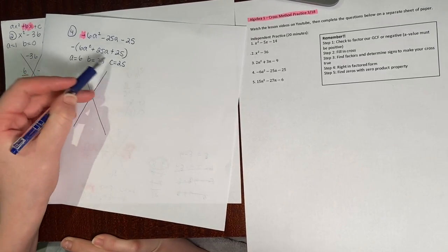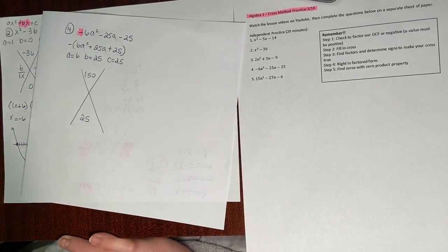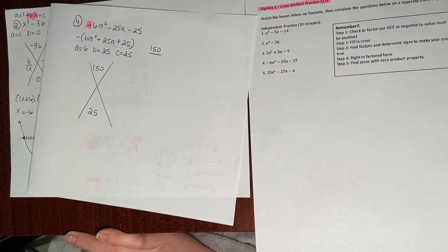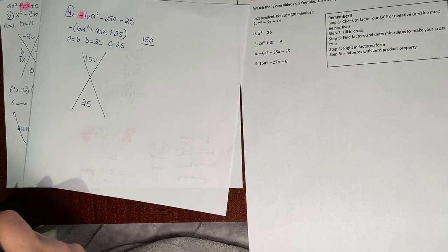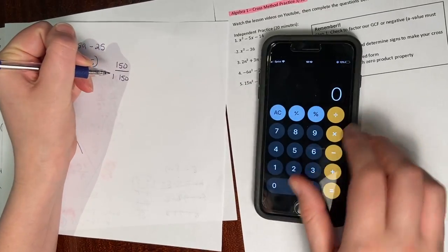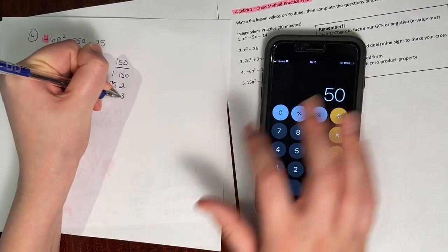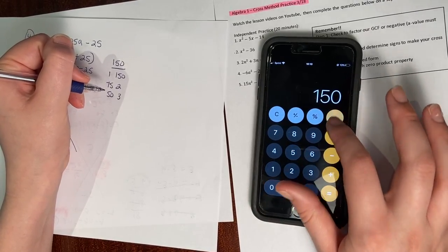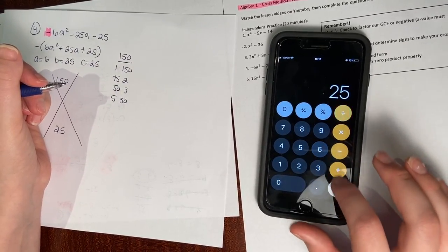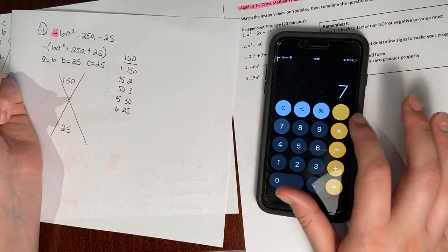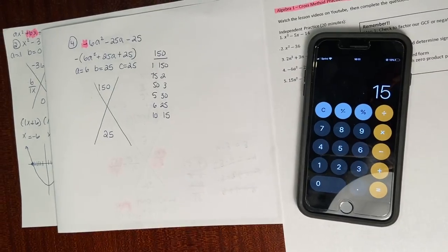A times c is 6 times 25, giving me 150. My b value is 25. I need to find all ways I can multiply to get 150 and add to get 25. Factor pairs: 1 and 150, 2 and 75, 3 and 50, 5 and 30, 6 and 25, 10 and 15.